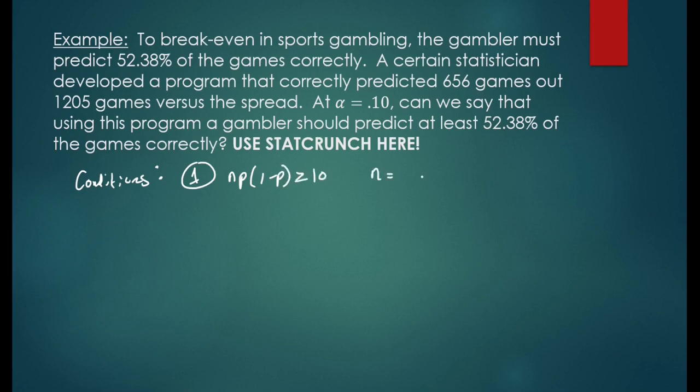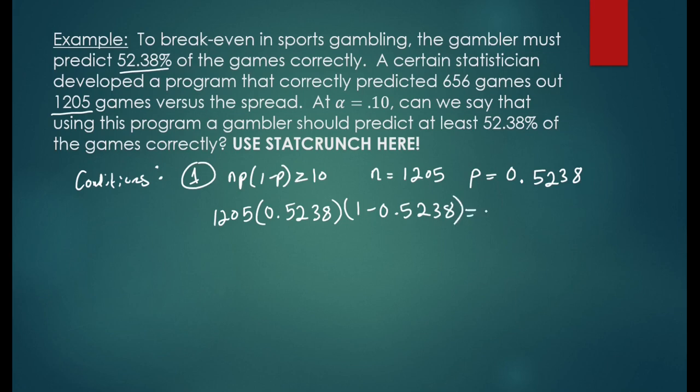n is the sample size, n is 1205. And p is the population proportion. And here we're predicting 52.38%. As a decimal, that's 0.5238.